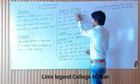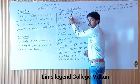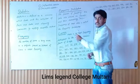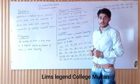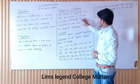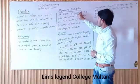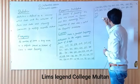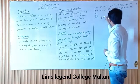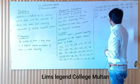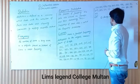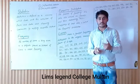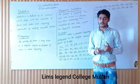ڈیٹا کو آپ groups کی form میں کر رہے ہیں، basically آپ classes بنا رہے ہیں۔ پھر آپ نے ان classes کی help سے frequency determine کرنی ہوگی۔ اس کے لیے میں آپ کو تین steps بتاؤں گا۔ First step: آپ کو اس میں range find کرنی ہوتی ہے۔ Range is the difference between maximum value and minimum value.